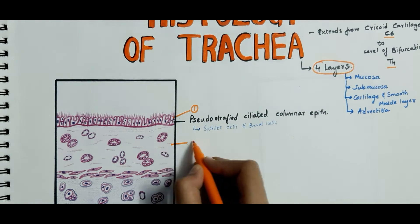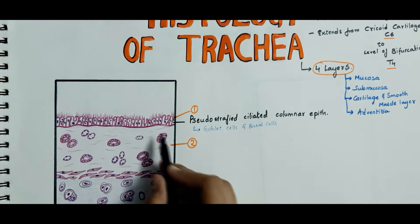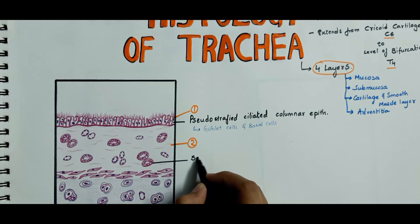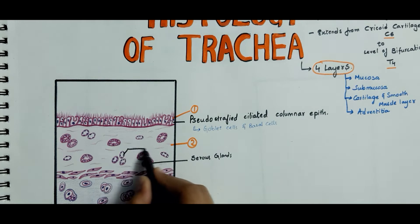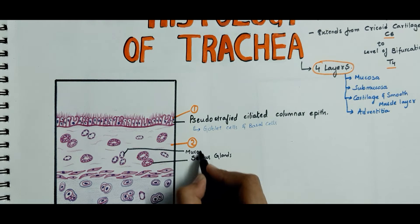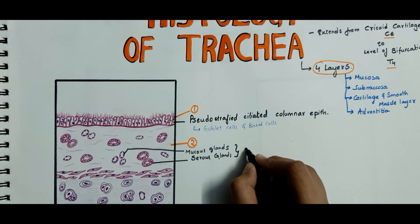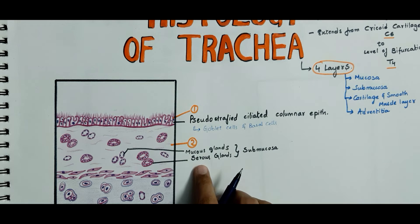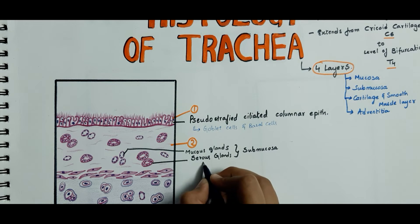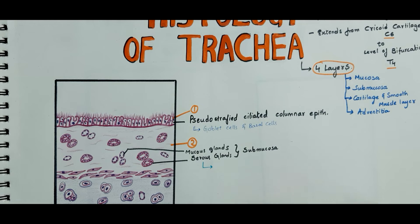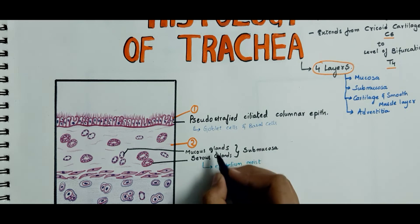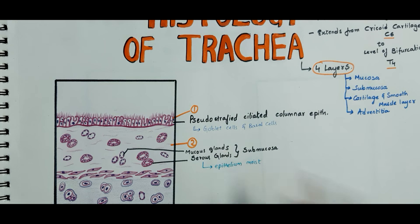Now coming to the submucosa. This consists of numerous elastic fibers. The submucosa contains serous glands and mucus glands. These are the serous glands and these are the mucus glands. Together, this is the submucosa.